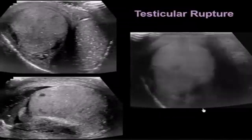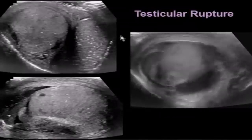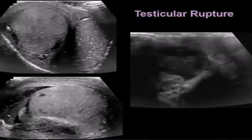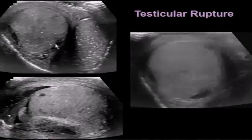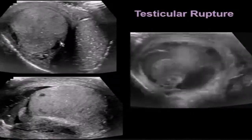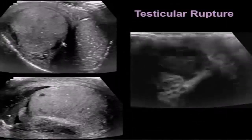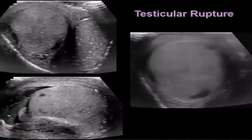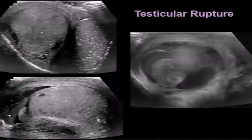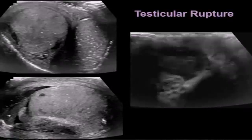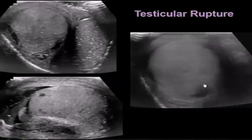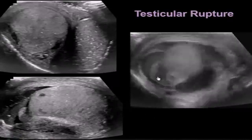Here's a patient with testicular rupture — this patient also has microlithiasis. This is the normal left testicle, and the right testicle shows a bulging and distorted posterior wall due to disruption of the capsule. On longitudinal view, we see disruption of the posterior lower pole with protrusion of testicular parenchyma through the defect in the tunica.